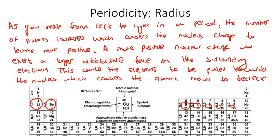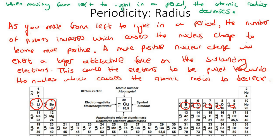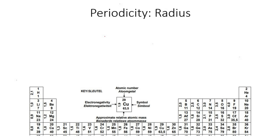So to summarize in a one-liner: when moving from left to right in a period, the atomic radius decreases. Now we're going to look at what happens when you go down, so we're going to look at lithium, sodium, and potassium.